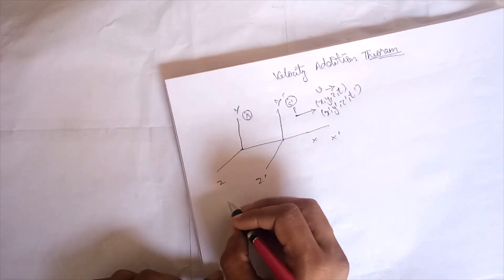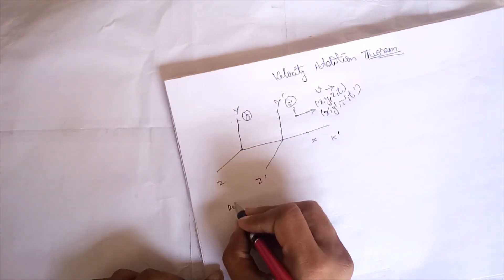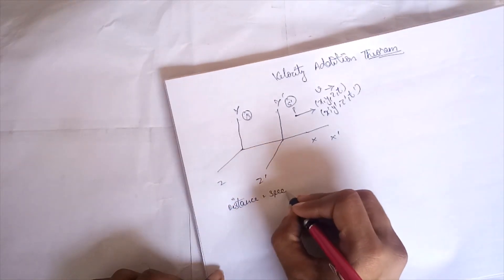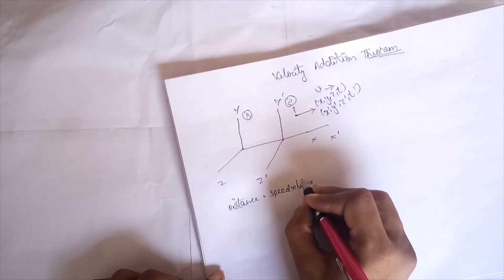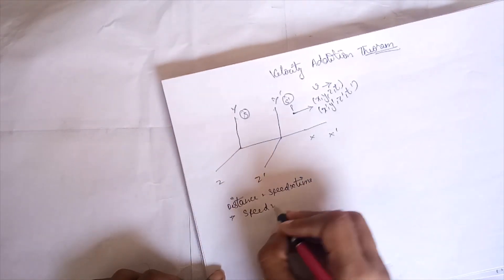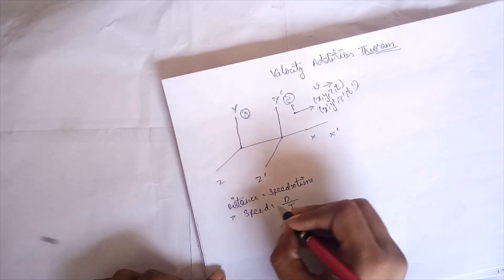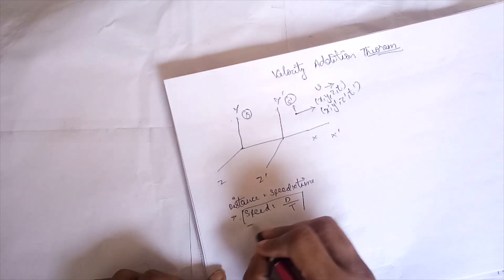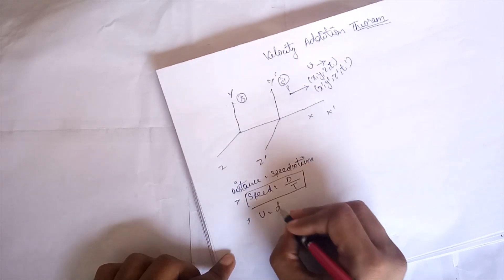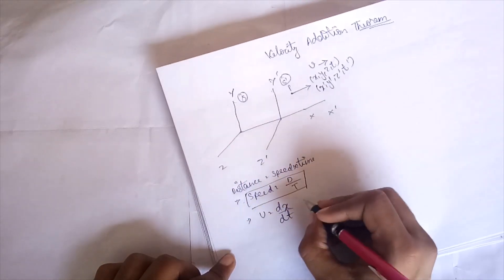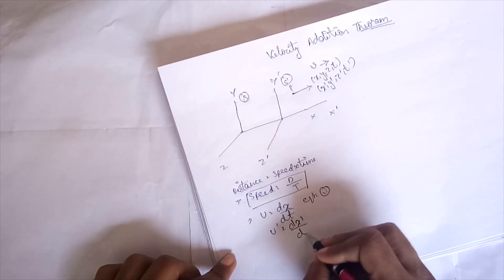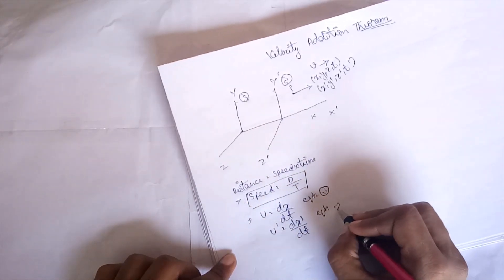We know that distance equals speed times time, which implies speed equals distance upon time. Therefore u = dx/dt (equation 1) and u-dash = dx-dash/dt-dash (equation 2).